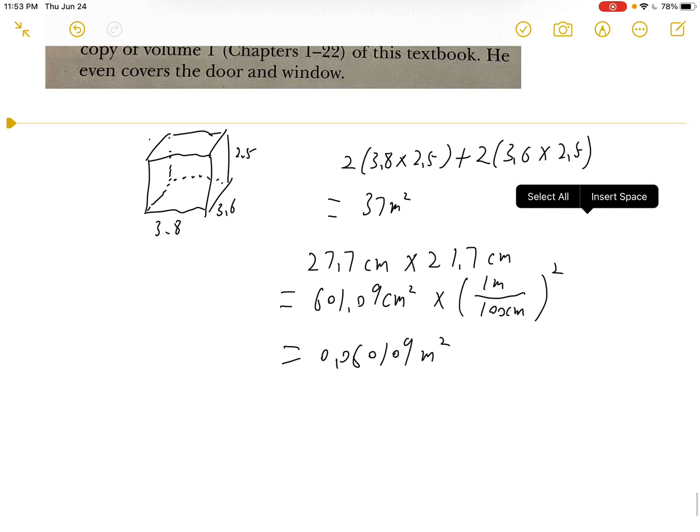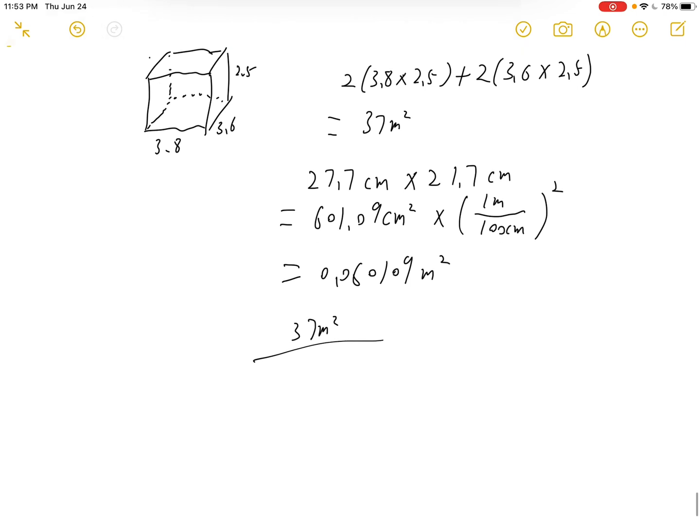If we divide the area of the room, which is 37 meters squared, by the area of a page, which is 0.060109 meters squared, this will give us 616.